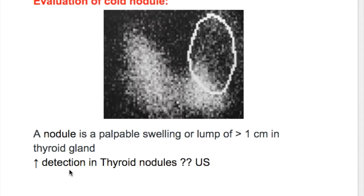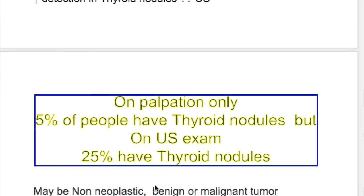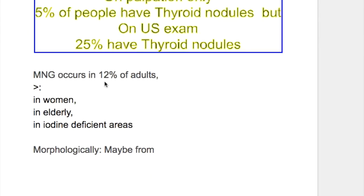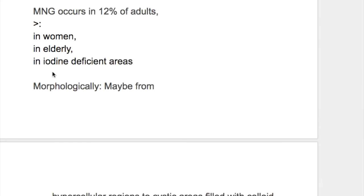There is an increased detection of thyroid nodules, mainly because of ultrasound. On palpation, only 5% of people have thyroid nodules, but on ultrasound examination, 25% have thyroid nodules. Multi-nodular goiter occurs in 12% of adults and is more common in women, the elderly, and in iodine-deficient areas.